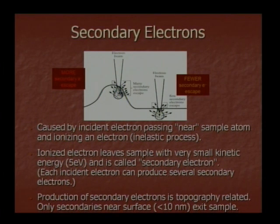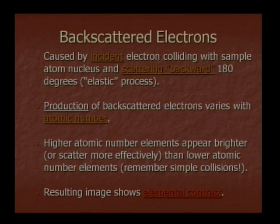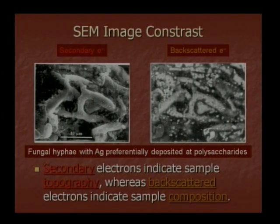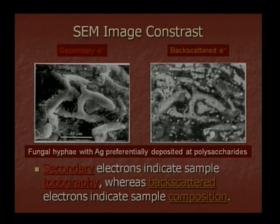Secondary electrons and backscatter electrons: backscattering occurs backward at 180 degrees. Production of backscatter electrons varies with atomic number. Secondary electrons and backscatter electrons indicate sample topography, whereas backscatter electrons also provide compositional material information.